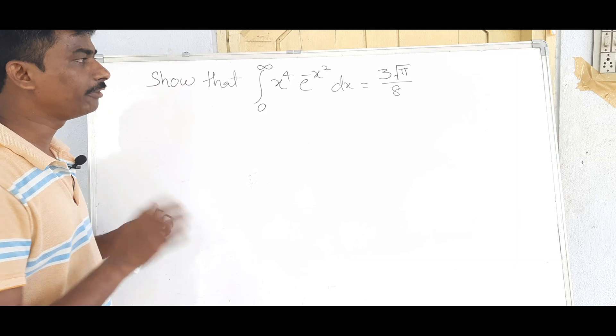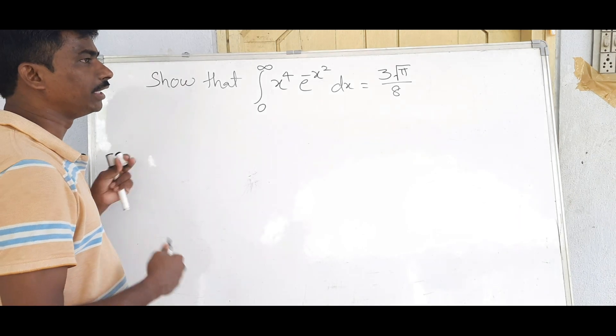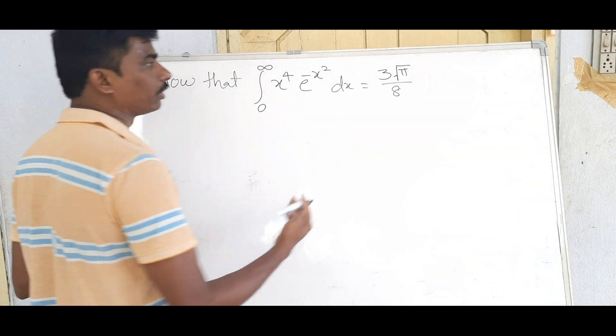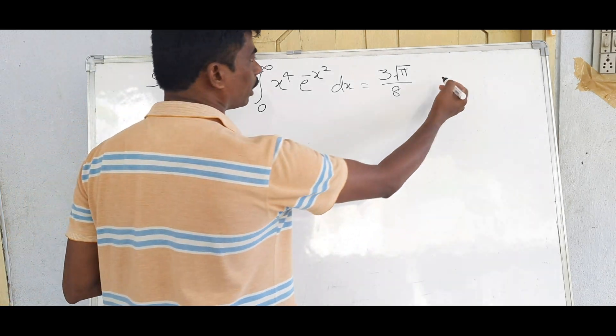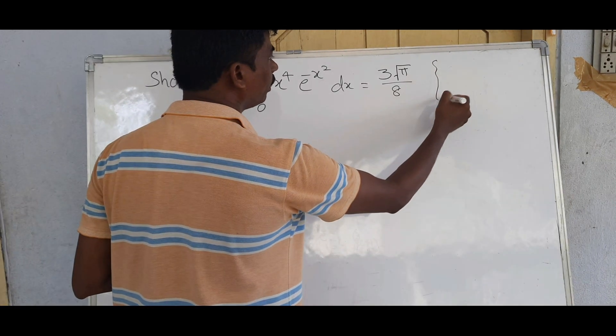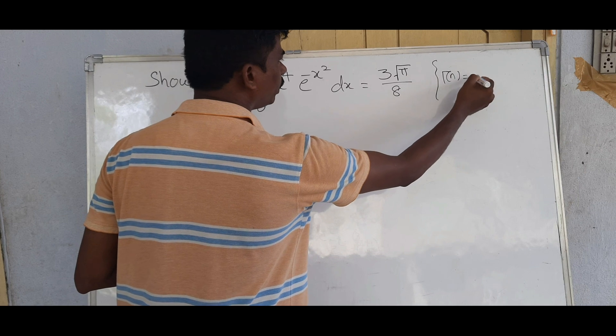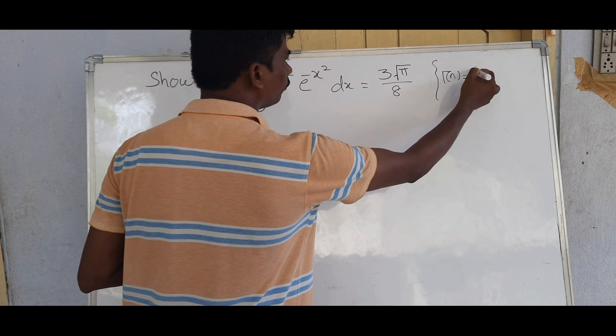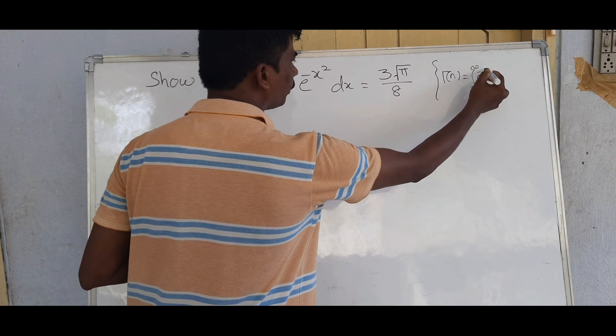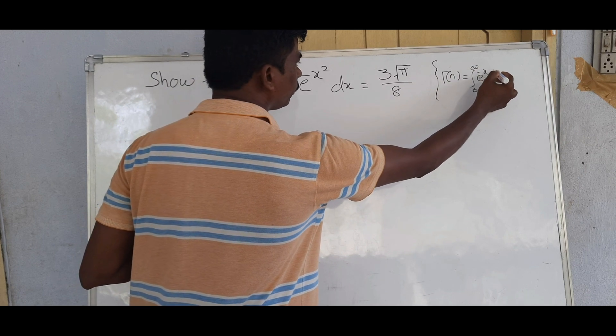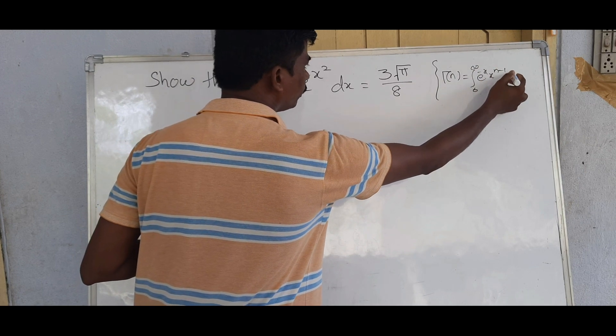What is the definition of Gamma? What is the form of Gamma? Gamma of n is equal to the integral from 0 to infinity of e^(−x) · x^(n−1) dx.